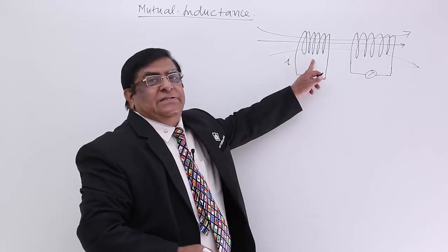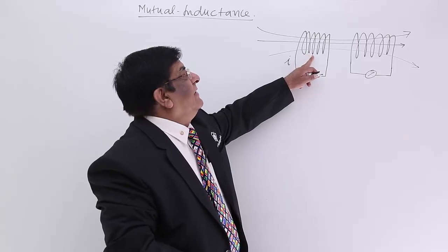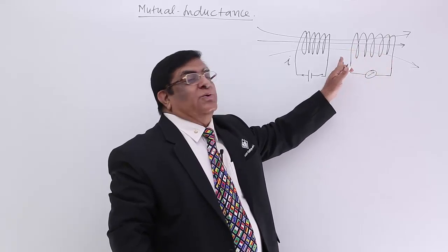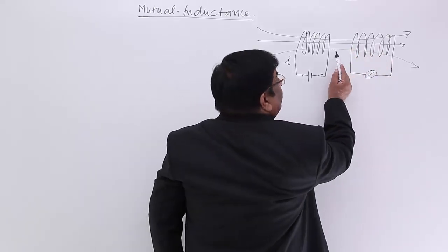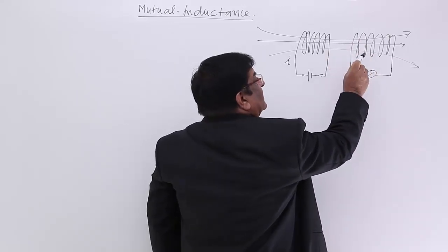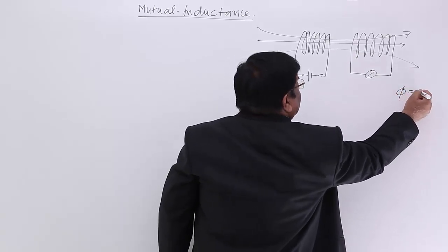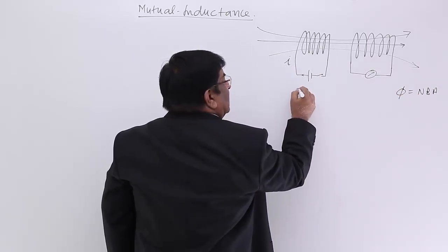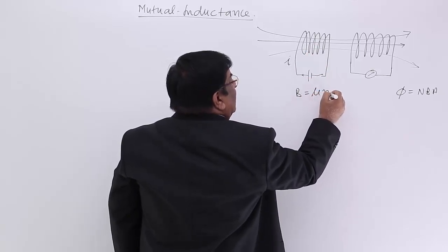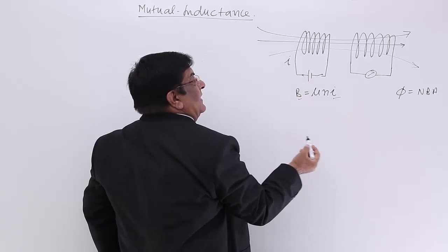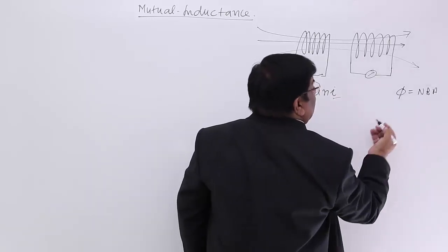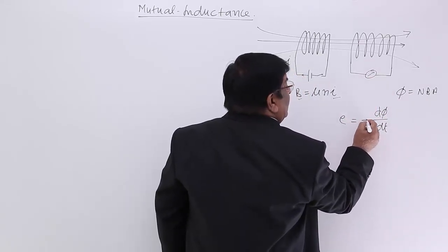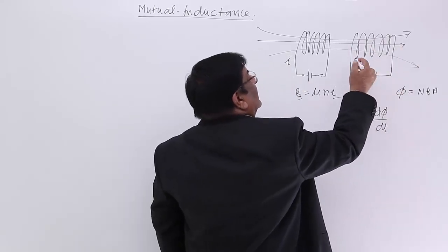The first coil is the magnetic field producing coil, and that magnetic field gets linked to the second coil as well because of its proximity — because it is very close to it. When a magnetic field connects with the area of the coil, that creates flux. Now there are changes in the current, so there will be changes in the magnetic field, changes in the flux, and if there is a change in the flux, then an EMF is induced across it. When the circuit is closed, current flows in it.